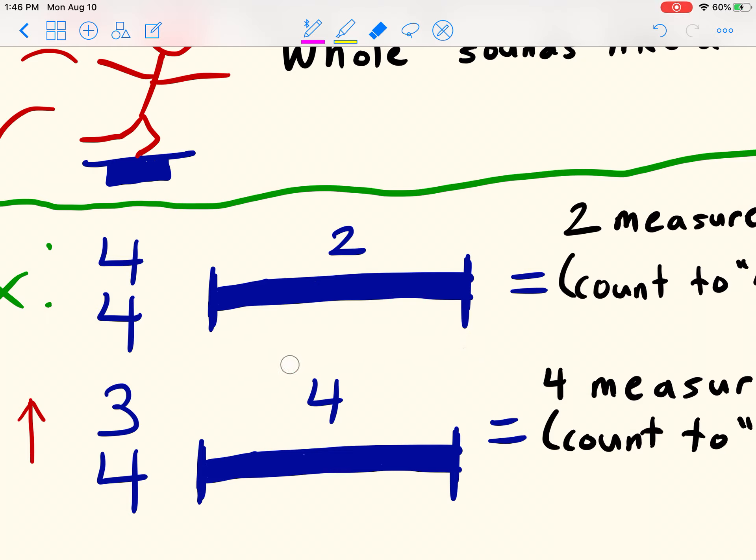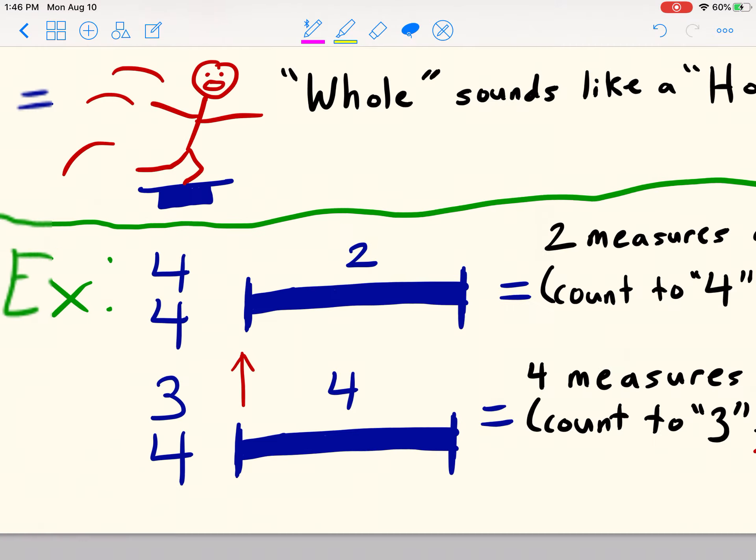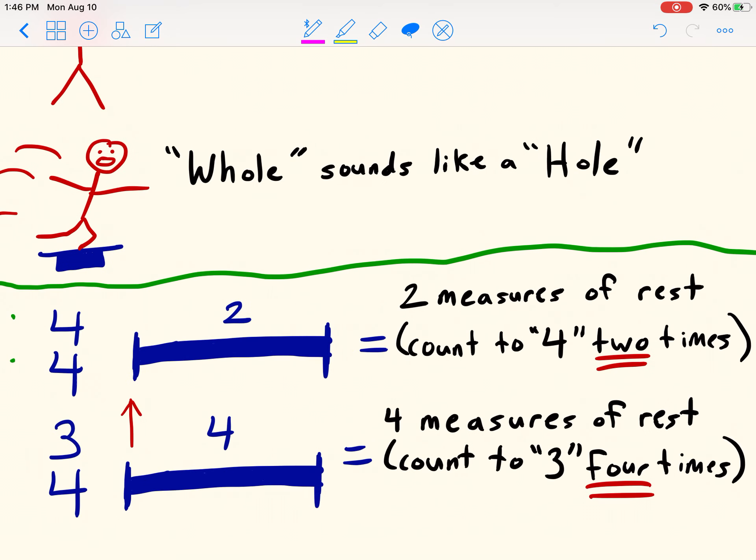Now we're going to move on to an example of rests in 3/4 time. So if we're in 3/4 and we see this long rest notation with a 4 on top, that means we're going to have four measures of rest. But we don't count to 4 each time. We're in 3/4. We're going to count to 3 each time. How many times? To be specific, we're counting to 3 four times. So we're going to say 1-2-3, 2-2-3, 3-2-3, 4-2-3.